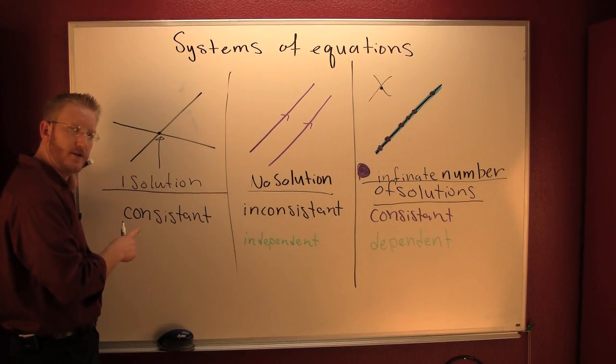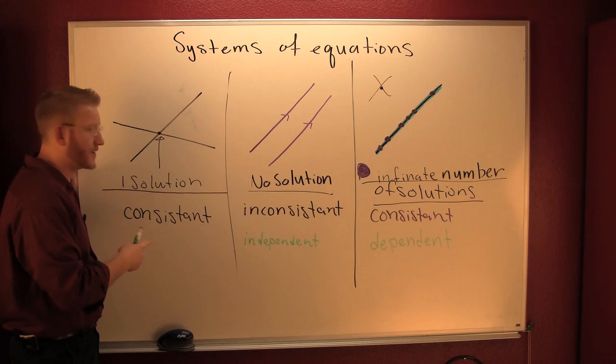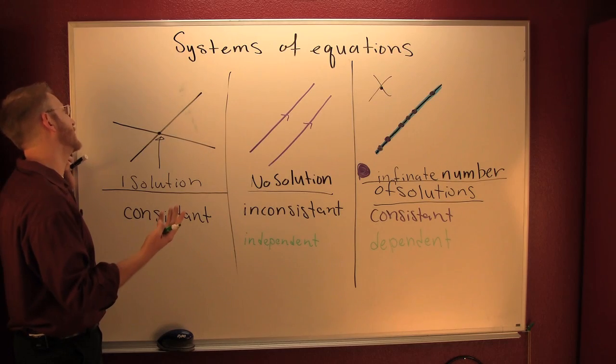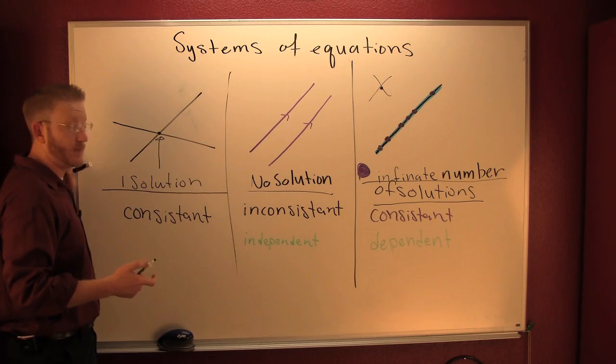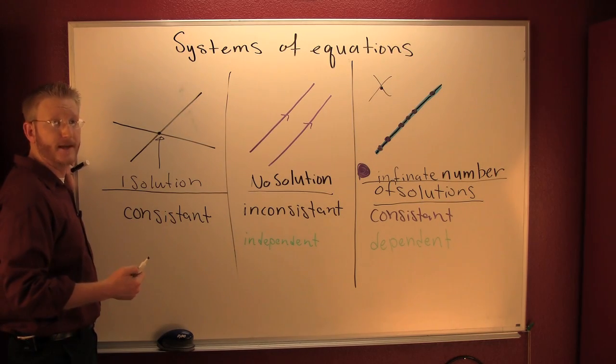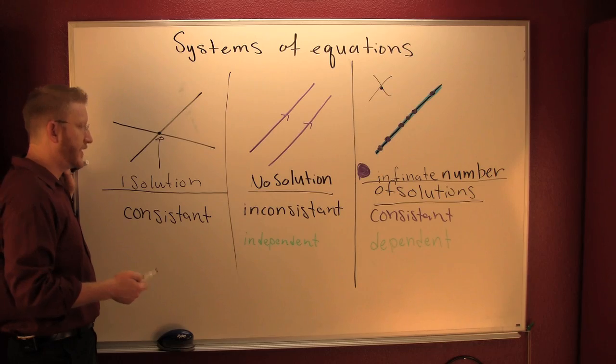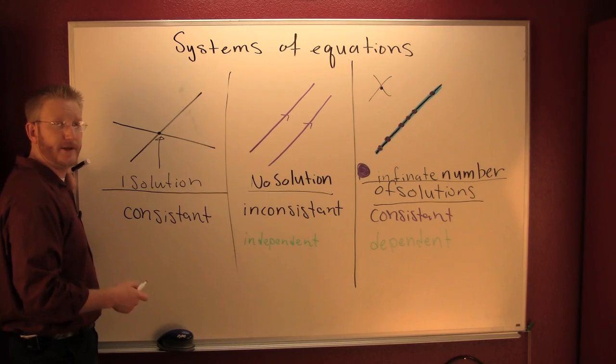Same line? No — look, they're not even going in the same direction. So if it's not the same line in your system, then this is said to be independent.